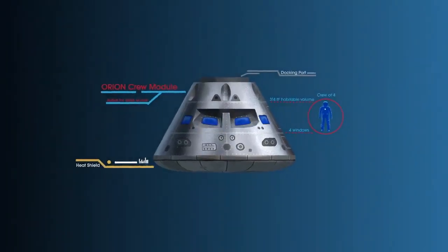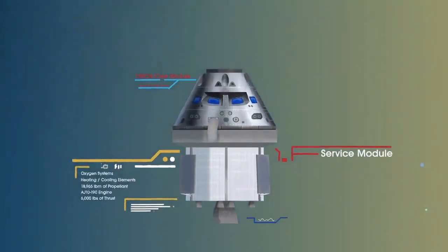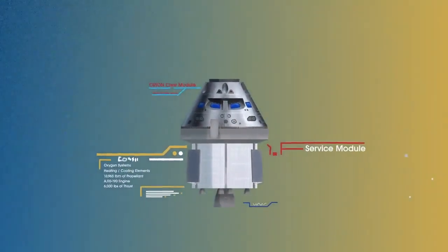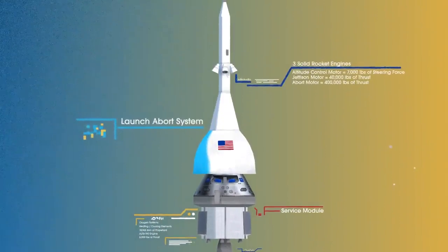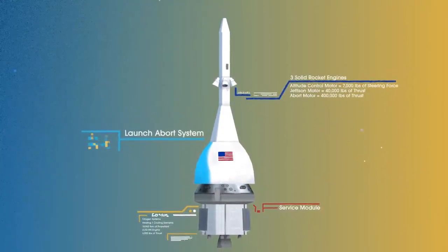The crew module, where up to four astronauts will live and work throughout the flight. The service module, with life-support systems for the crew and its own engine and fuel reserves, and a launch abort system with engines capable of pulling the crew module to safety during launch should anything go wrong.